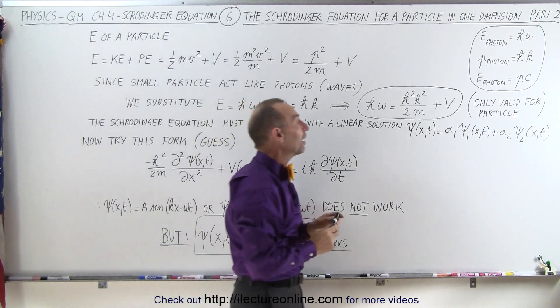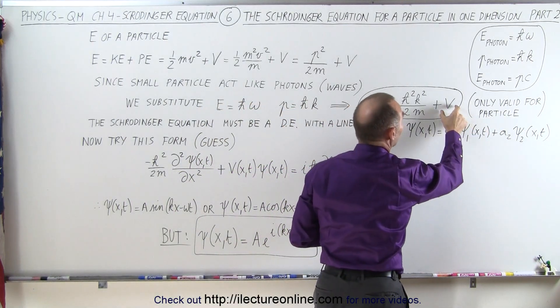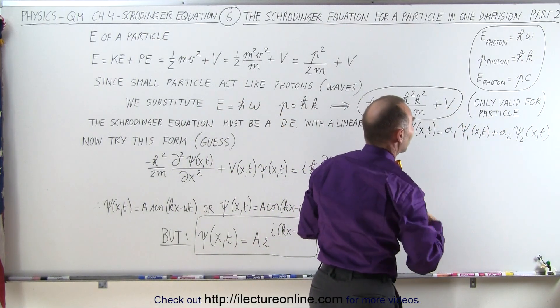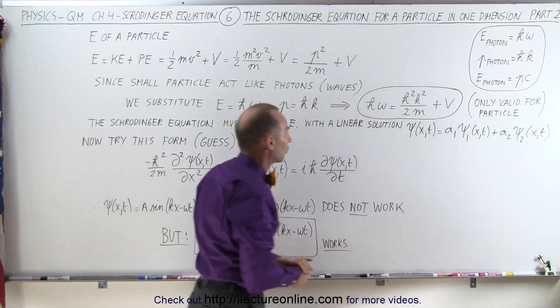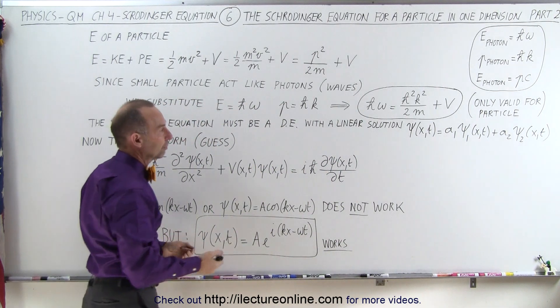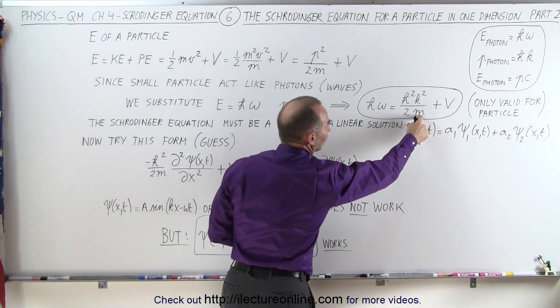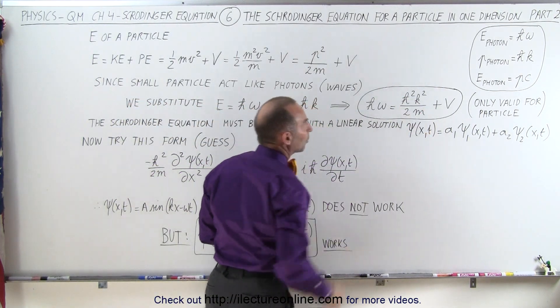Remember that this is only valid for a particle because we can't have a photon that has potential energy like this. So this can only be valid for a real particle with mass. And of course, if mass is equal to zero, we have this divided by zero, and that would be undefined.